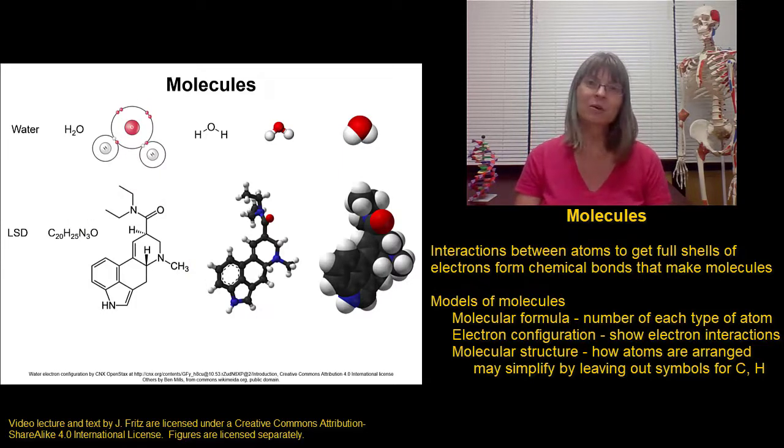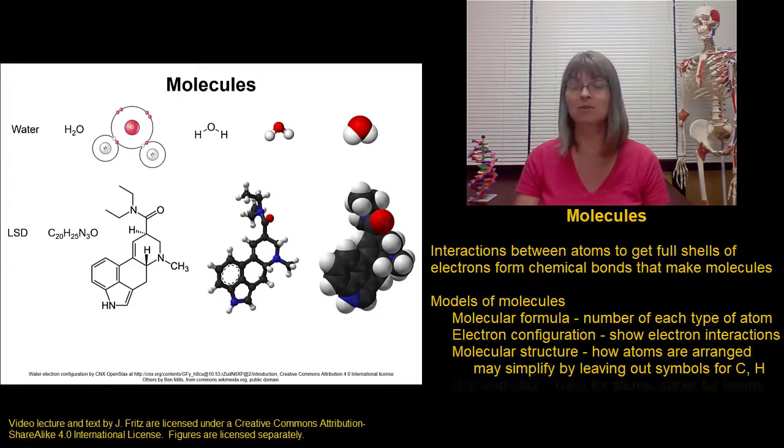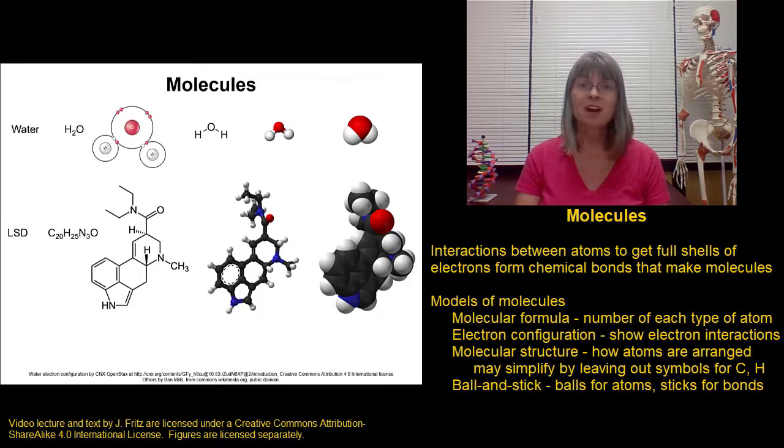Sometimes it's nice to have a little bit more of a three-dimensional or a little more visual model. And so we'll often see things in the ball and stick model form where the nucleus of each atom is represented with a ball. In this case, we have a red ball for oxygen and white balls for hydrogen.